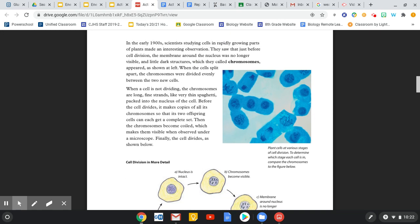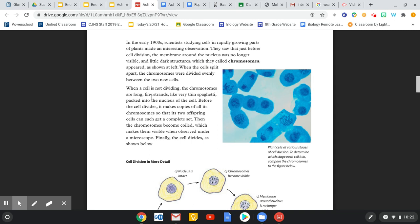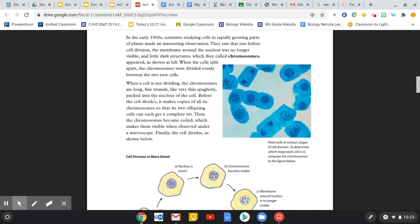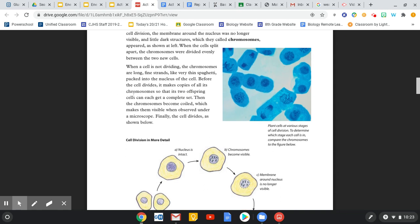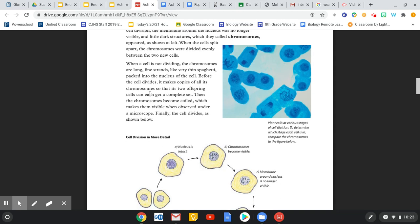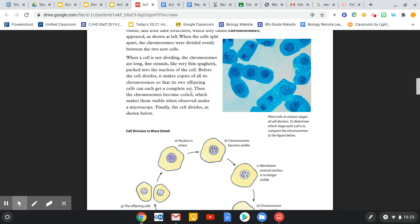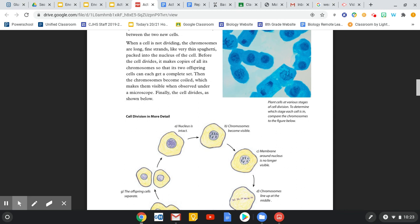When a cell is not dividing, the chromosomes are long, fine strands like very thin spaghetti, packed into the nucleus of a cell. Before the cell divides, it makes copies of all its chromosomes so that the two offspring cells can each get a complete set. Then the chromosomes become coiled, which makes them visible when observed under a microscope. Finally, the cell divides as shown below.